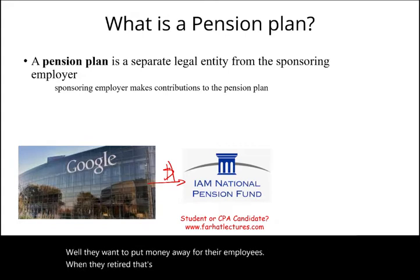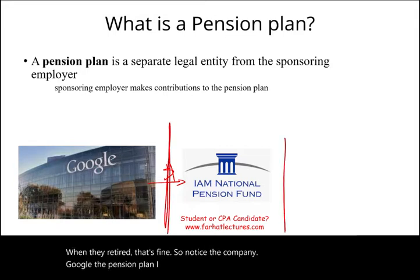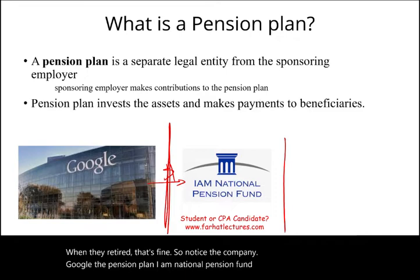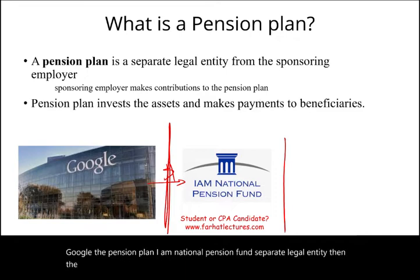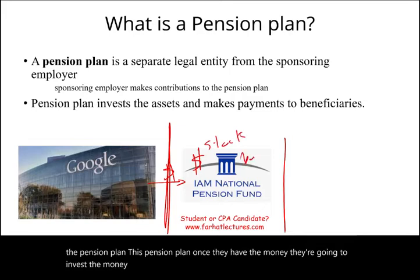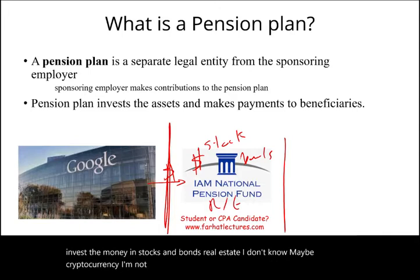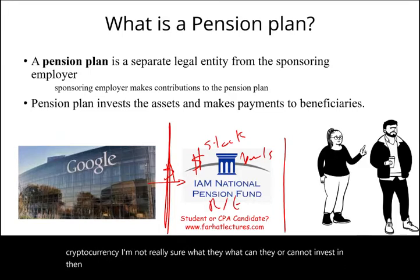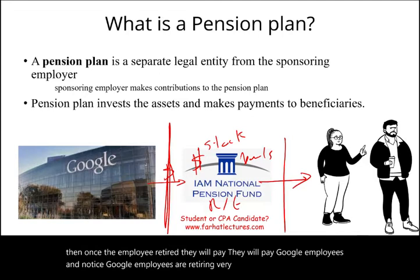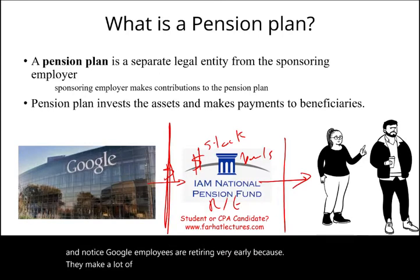Notice: the company — Google — and the pension plan — I AM National Pension Fund — are separate legal entities. The pension plan, once it has the money, will invest it in stocks and bonds, real estate, maybe cryptocurrency. Then once employees retire, the plan will pay Google's employees. And notice Google employees are retiring very early because they make a lot of money.